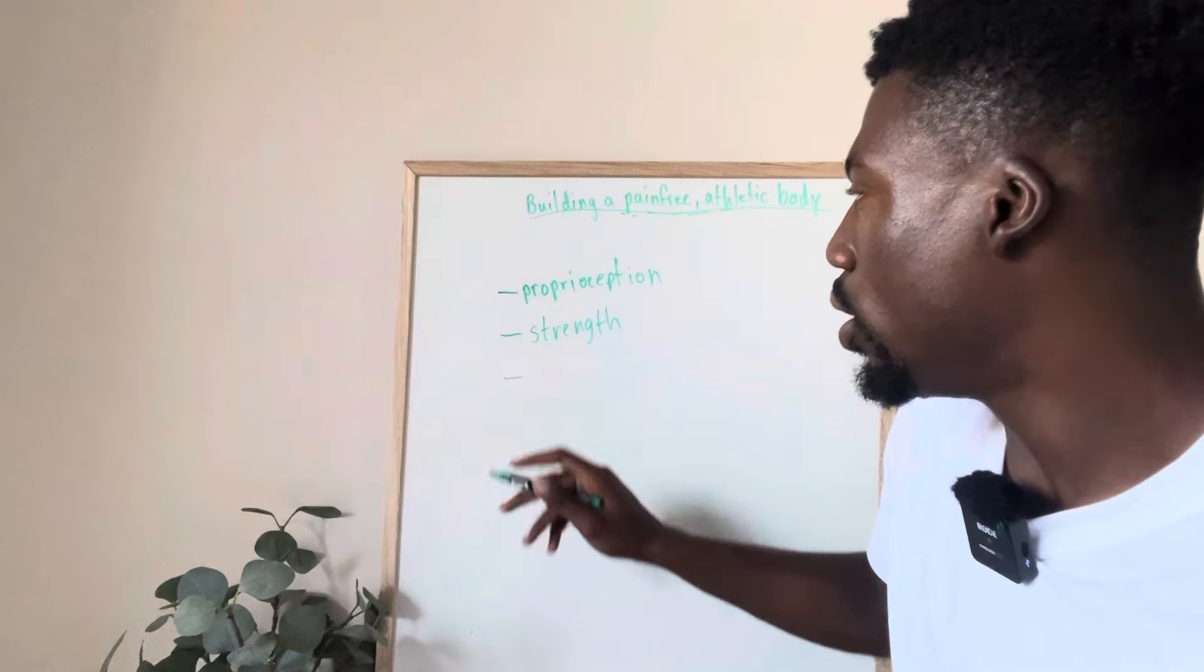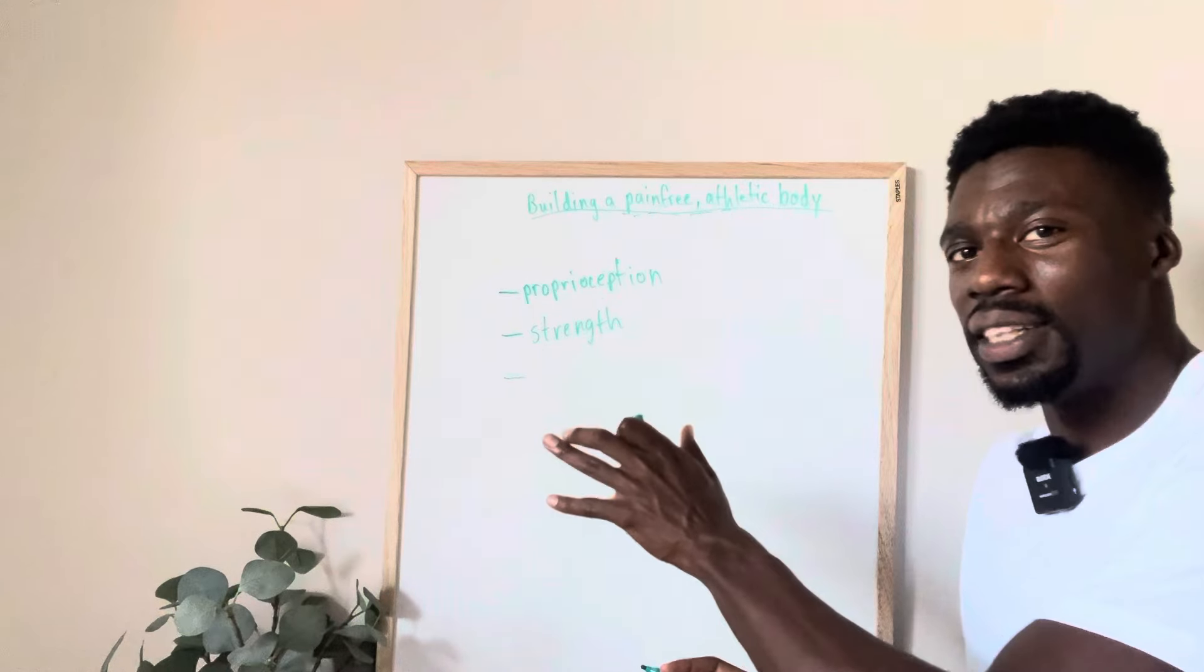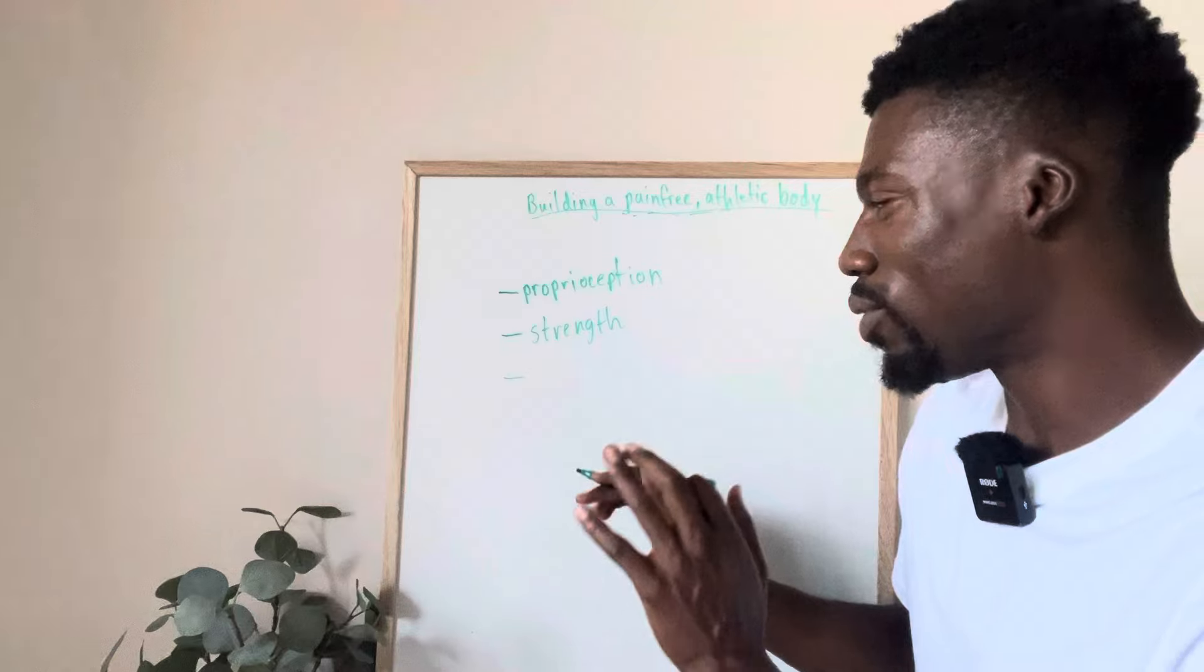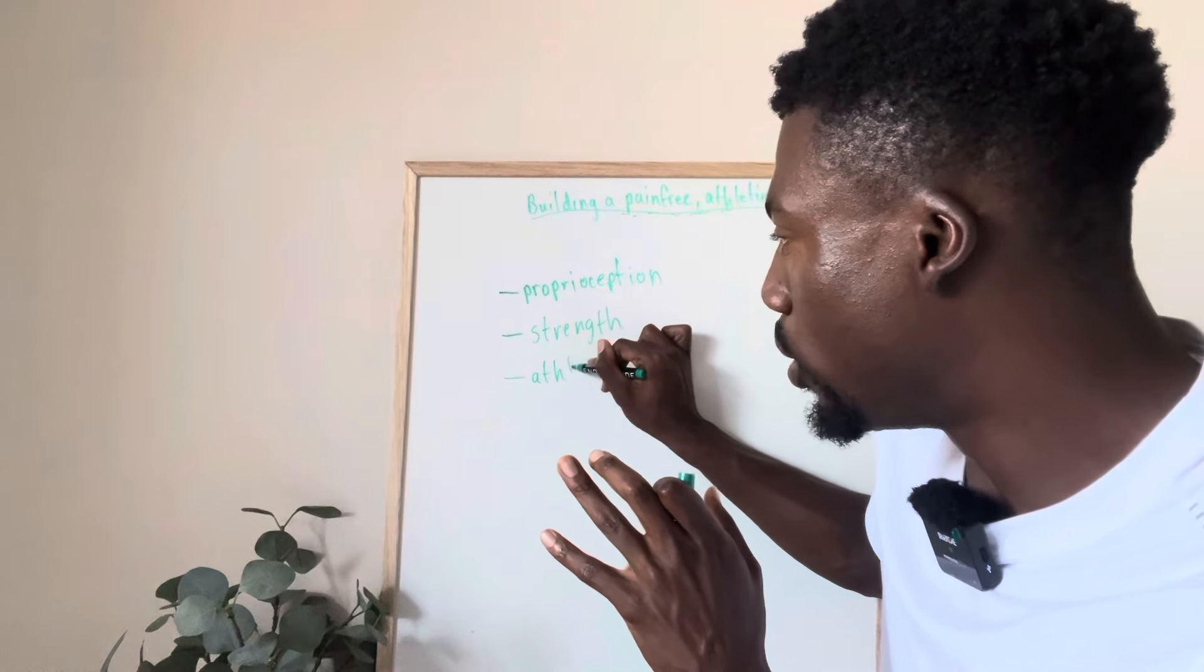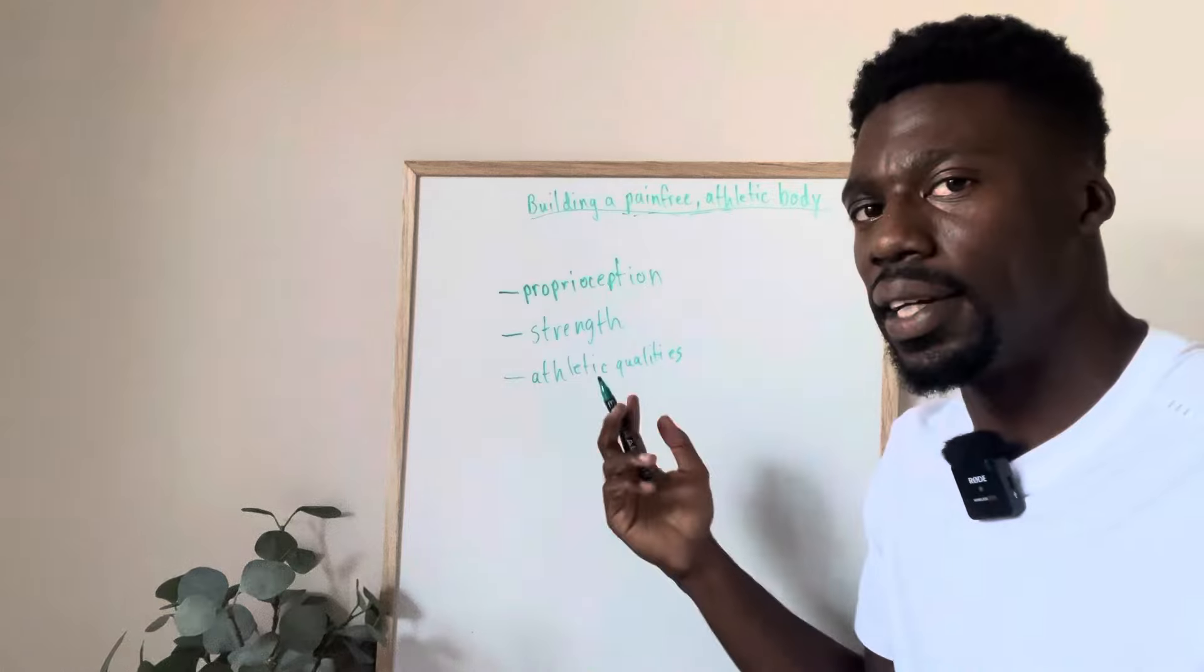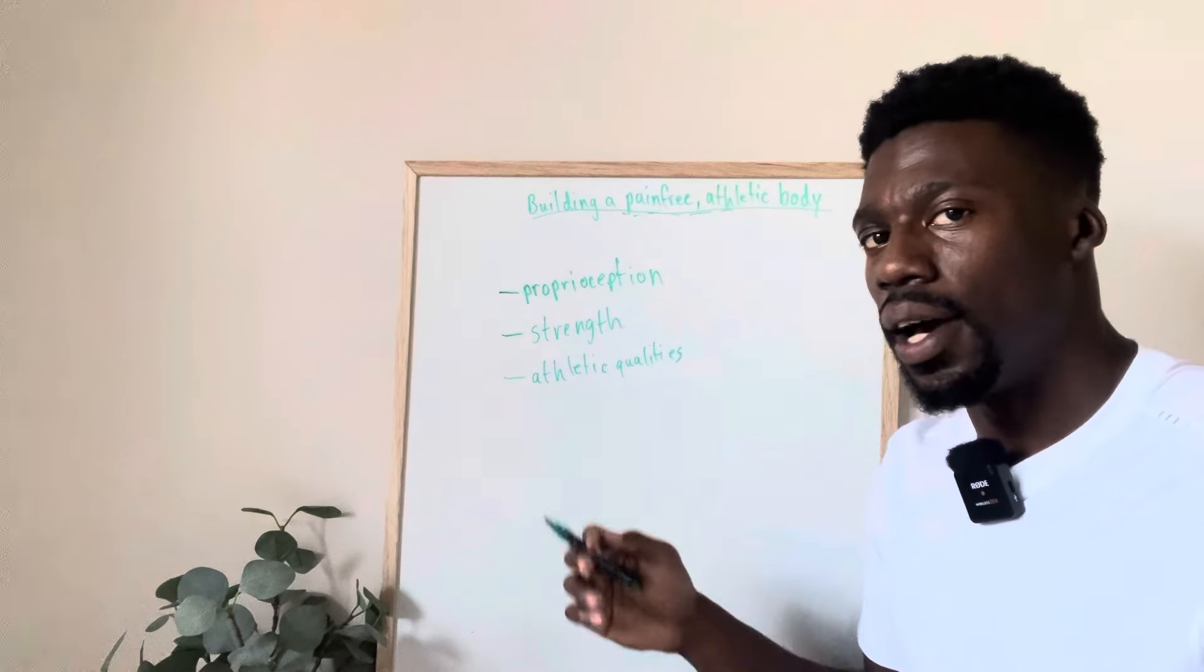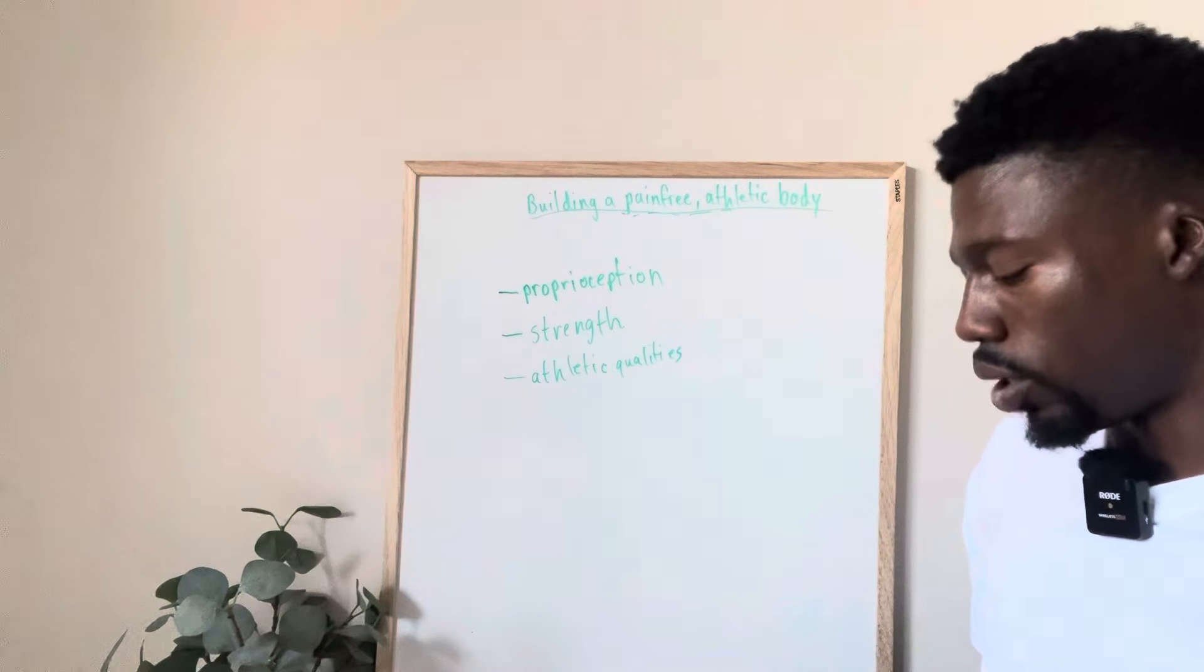So when it comes to building a pain-free athletic body, you can think of these different aspects of that. So let's say you have proprioception, in my opinion probably the most overlooked aspect. And then you have strength. This one is hammered home the most by most of the industry, whether it's the therapy side of things or the performance side. And then let's say athletic qualities, and that's things like cutting and running and jump height, your speed, stuff like that.